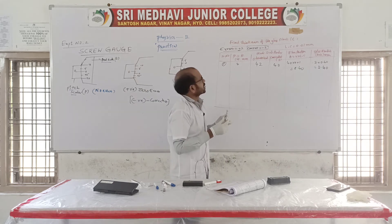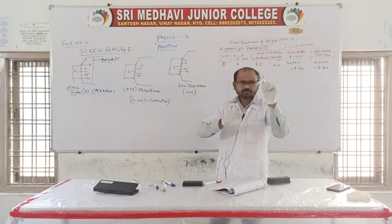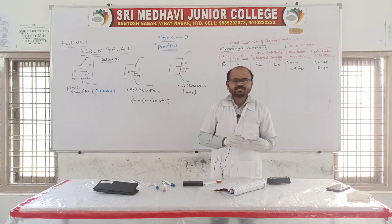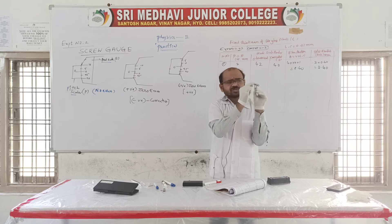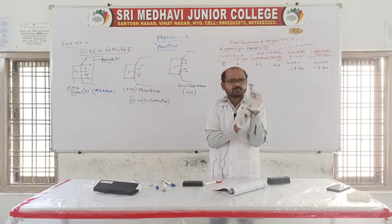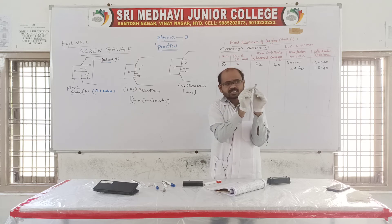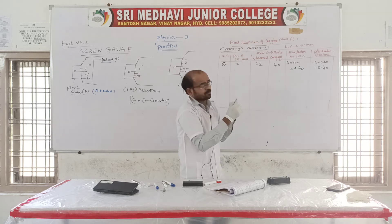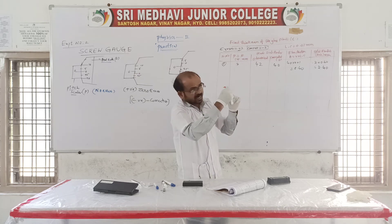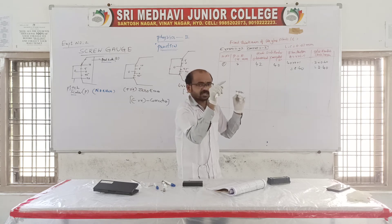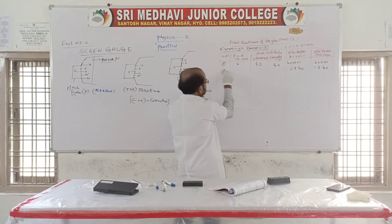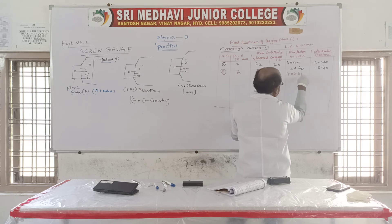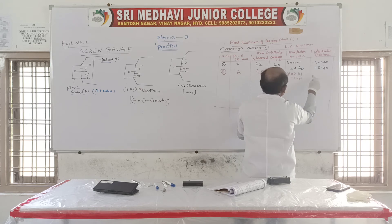For the second reading, remove and refix the glass plate. Again PSR = 2. Observed head scale reading = 43. Corrected value = 43 − 2 = 41. Extra fraction = 41 × 0.01 = 0.41 mm. Total reading = 2 + 0.41 = 2.41 mm.